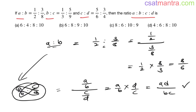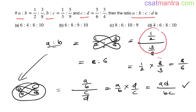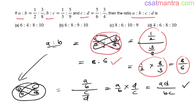Observe: a·d and b·c. Now you can write it directly — 1×8 = 8, and 2×3 = 6. You can directly write from here: 1×8 : 2×3 = 8:6. So a:b should be 8:6. Option C should be our answer.